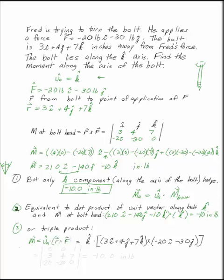And that essentially stacks up your unit vector, your R vector, and your force vector all on top of each other. And you only have to do the determinant once. If you do the determinant of that matrix, you get minus 10 inch pounds.